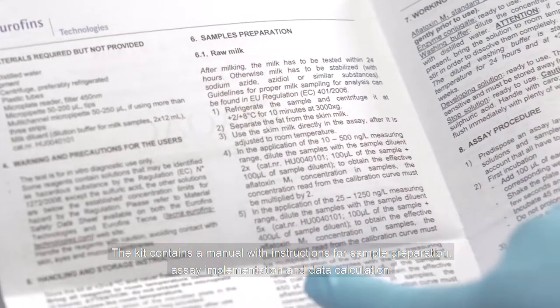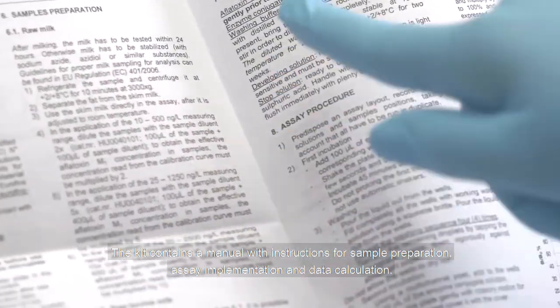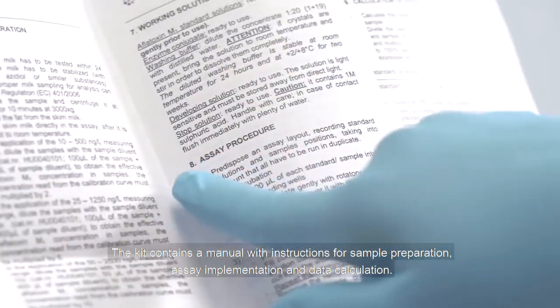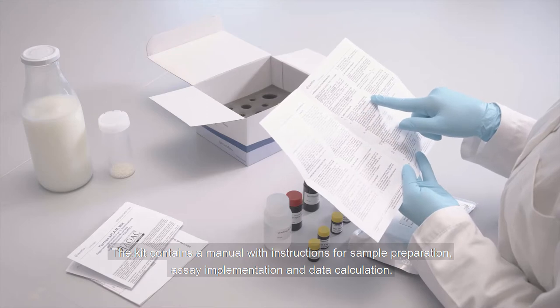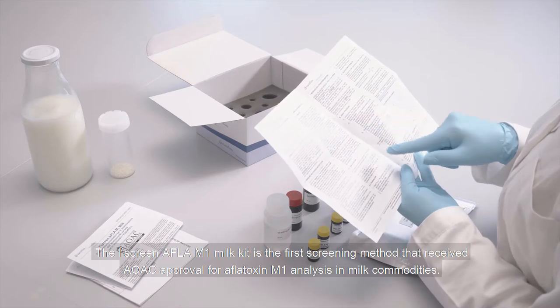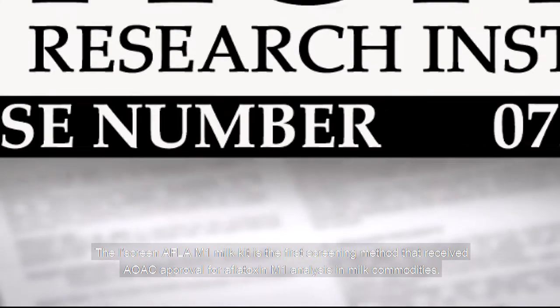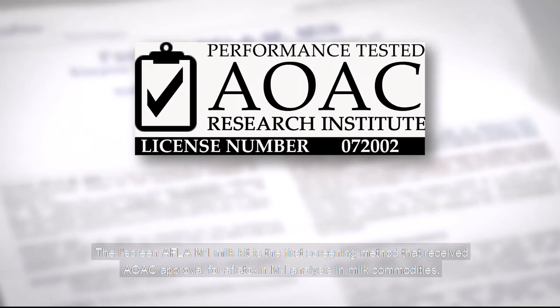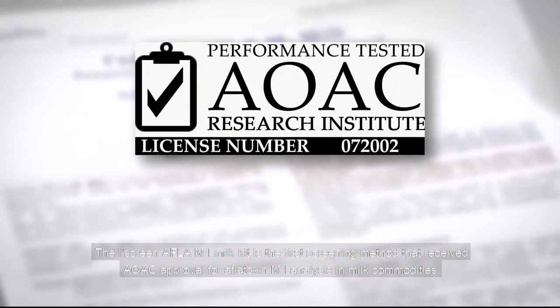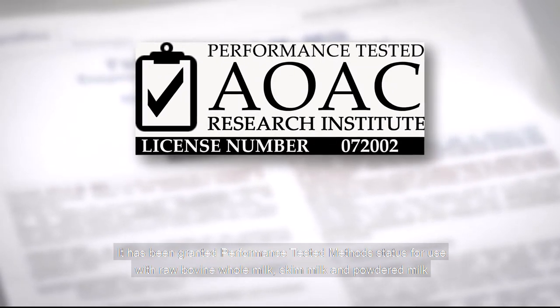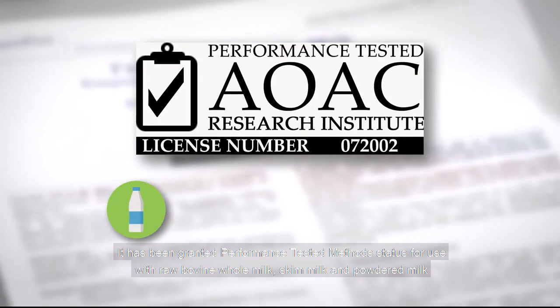The kit contains a manual with instructions for sample preparation, assay implementation and data calculation. The Icegreen Afla M1 milk kit is the first screening method that received AOAC approval for Aflatoxin M1 analysis in milk commodities. It has been granted performance tested method status for use with raw bovine whole milk, skim milk and powdered milk.